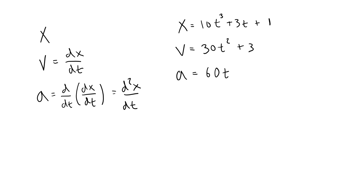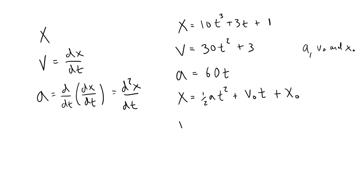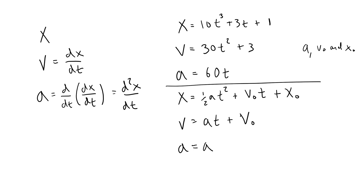If I did this symbolically with a position equation of one half a t squared plus v-naught t plus x-naught, where a, v-naught, and x-naught are all constants, then when I took the derivative I would get a times t plus v-naught. And if I took the derivative of that velocity equation to get the acceleration, I would just get a. Funny how that works out.